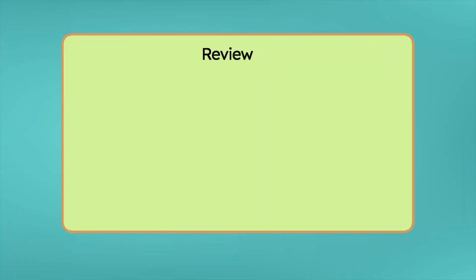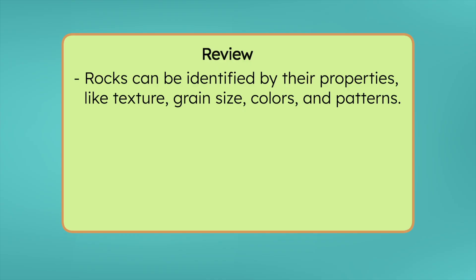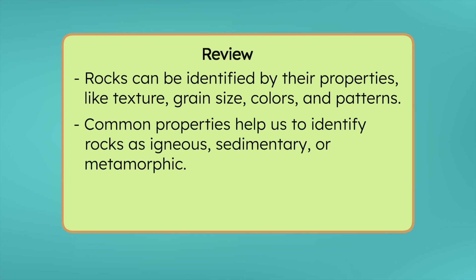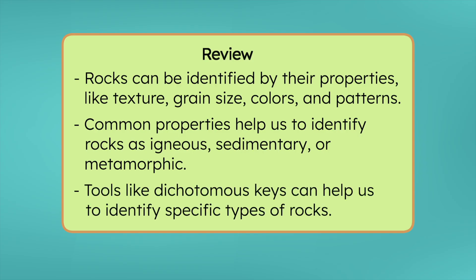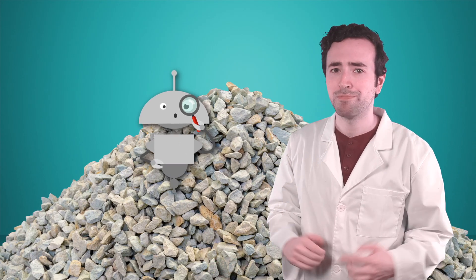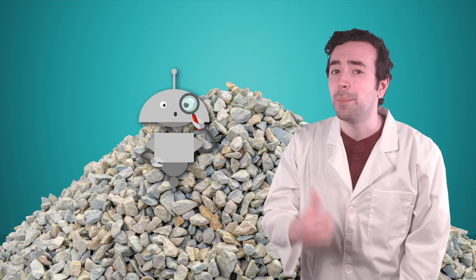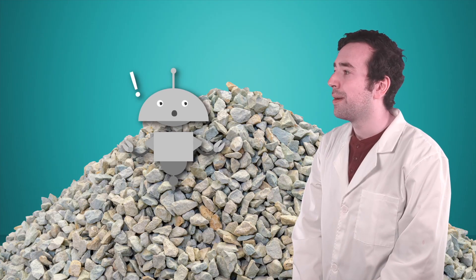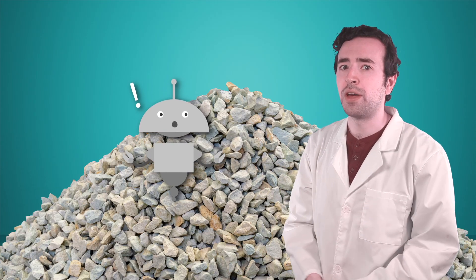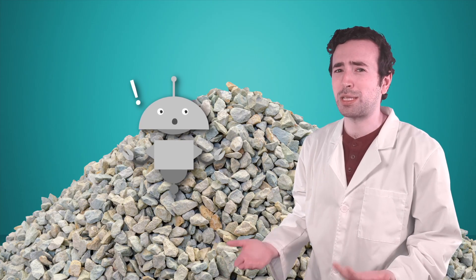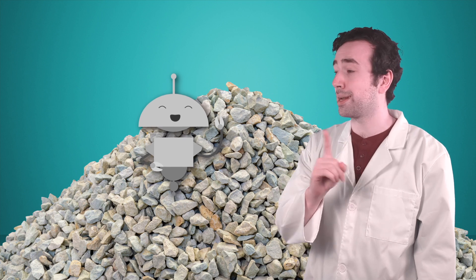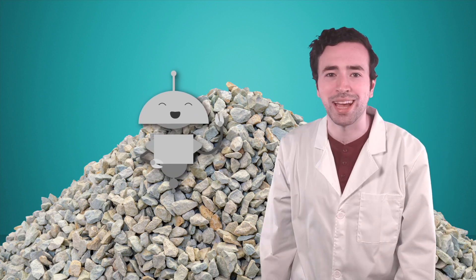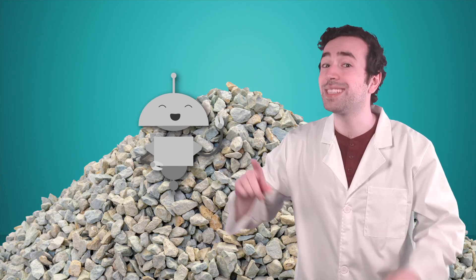Let's review everything we've learned today. Rocks can be identified by their properties, like texture, grain size, colors, and patterns. Common properties help us to identify rocks as igneous, sedimentary, or metamorphic. Tools like dichotomous keys can help us to identify specific types of rocks. To learn more about identifying rocks, be sure to check out the activities and practice questions that go with this lesson. Thanks for your help today, scientists! Now that we know how to identify rocks, Mia and I can get started on identifying our whole collection — maybe not all of them. Maybe we should put most of these rocks back where we found them, but we'll keep a few cool ones to study later. Keep exploring, scientists! There's always more to discover beneath the surface. See you next time!